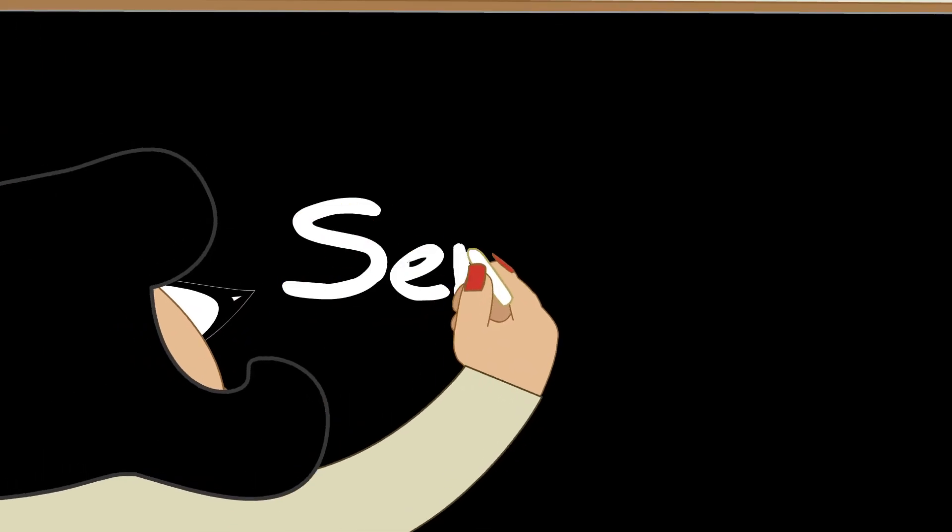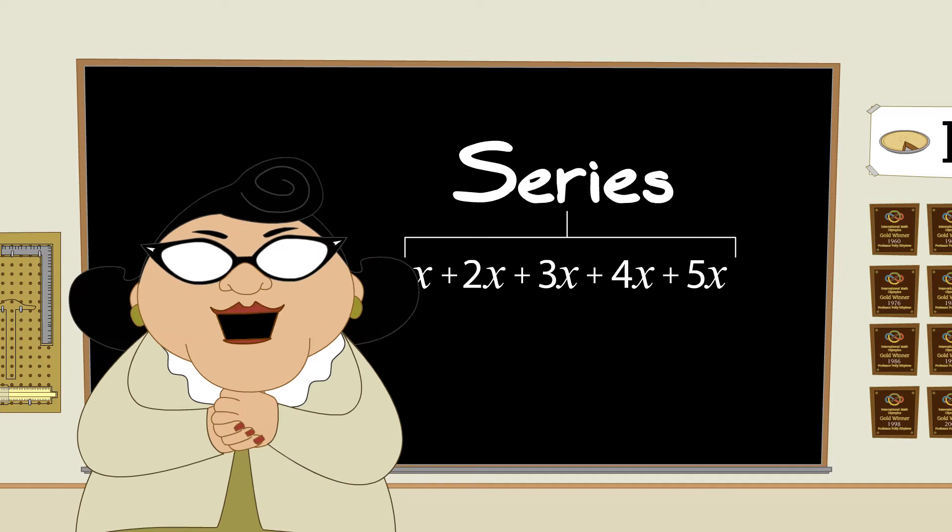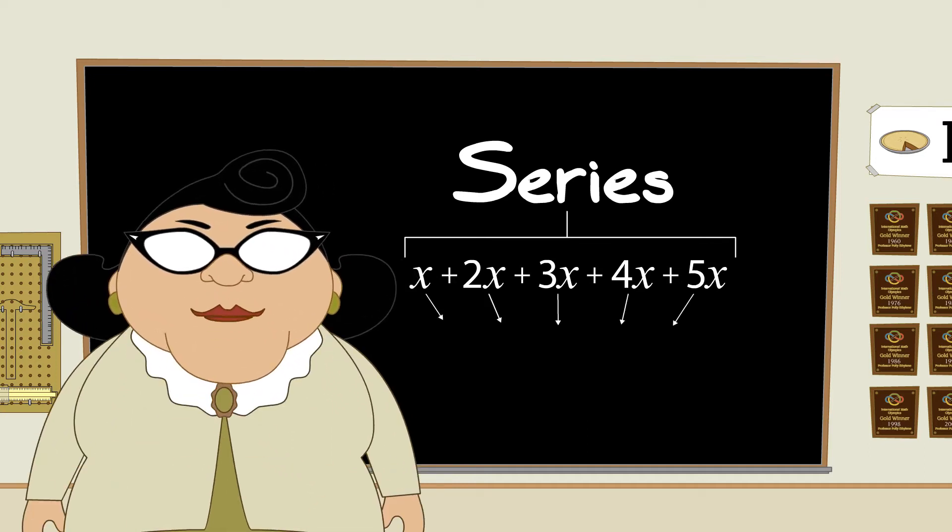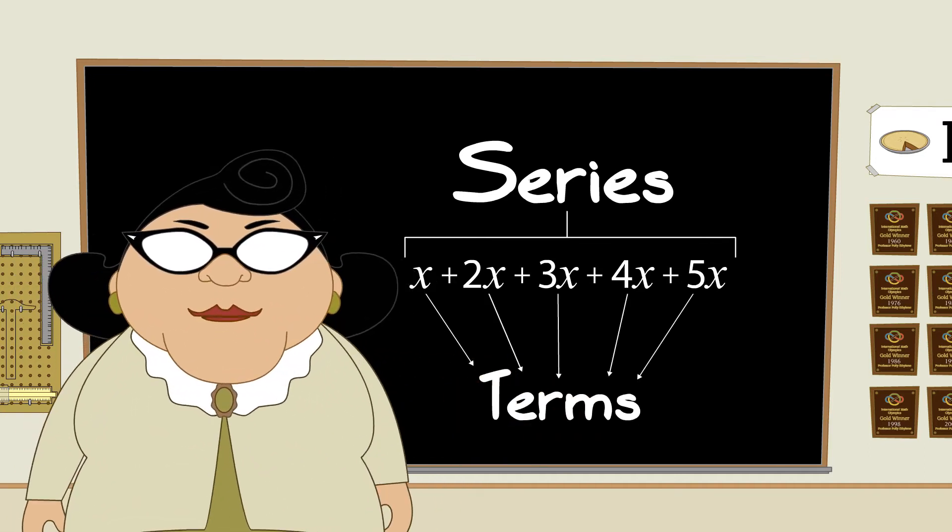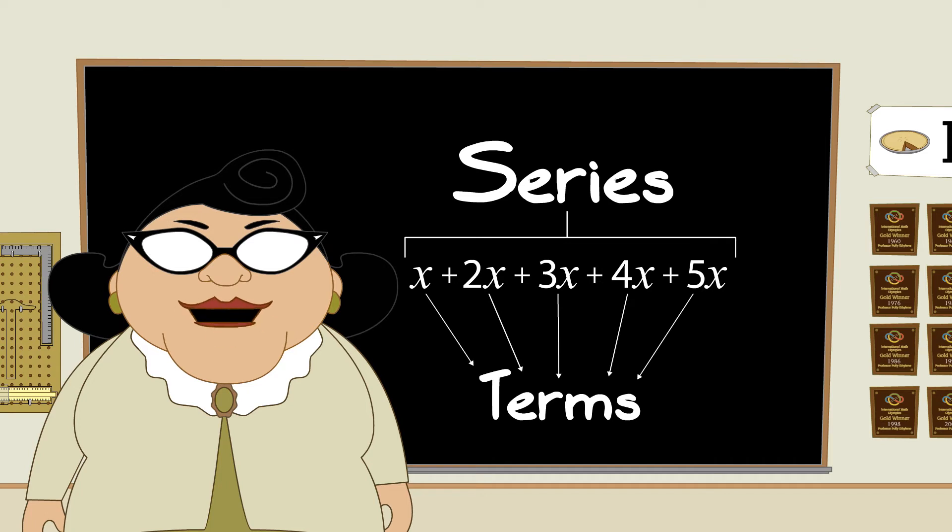So, let's talk about what a series is. A series is just a list of things added together. These things can be numbers, or they can be expressions or formulas which create numbers. Let's call these cute little things that are added together terms. So, a series is just a sum of terms.